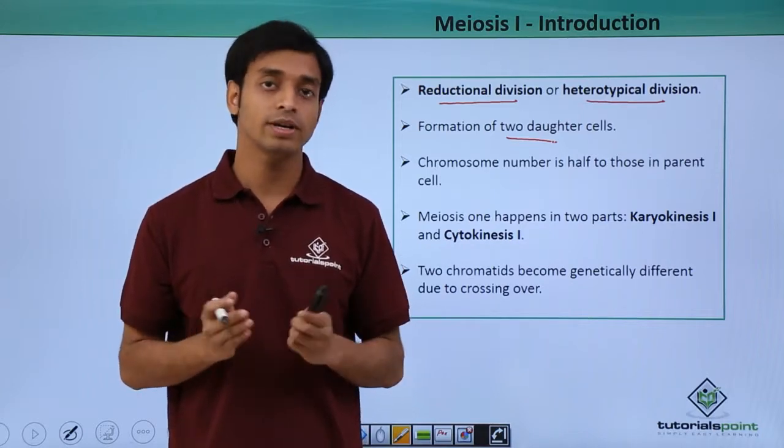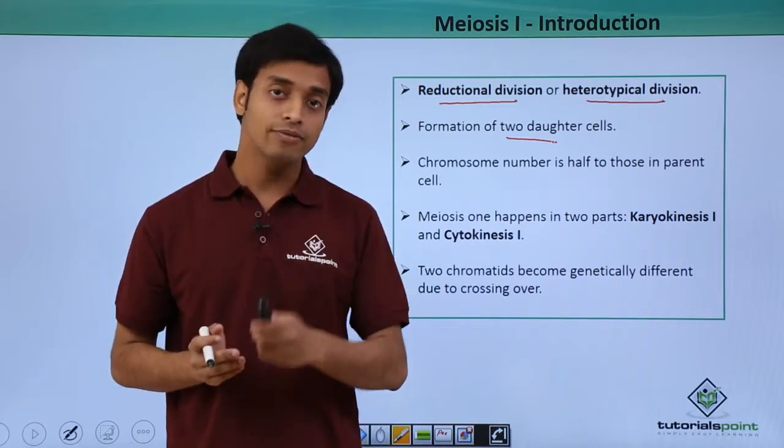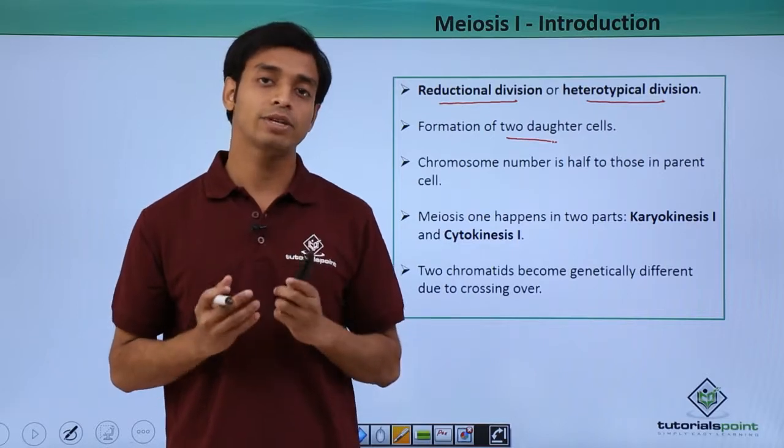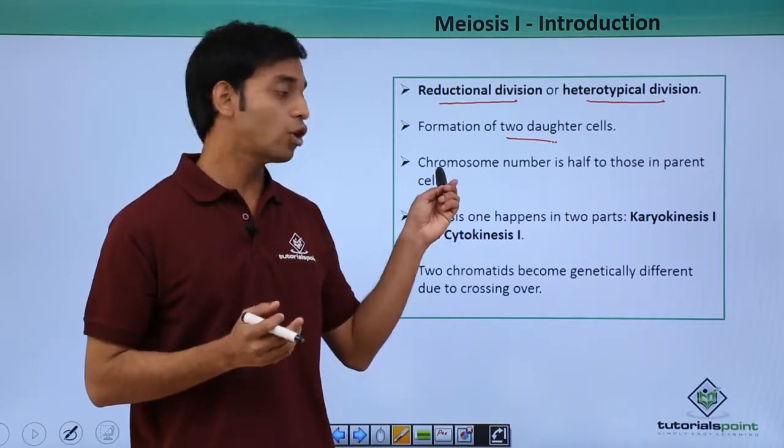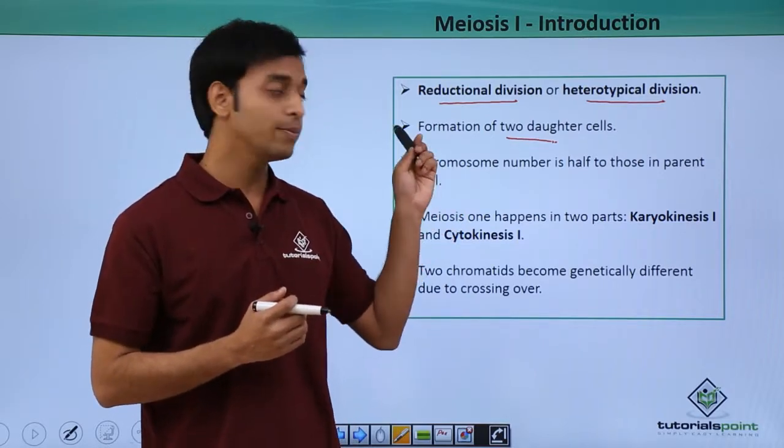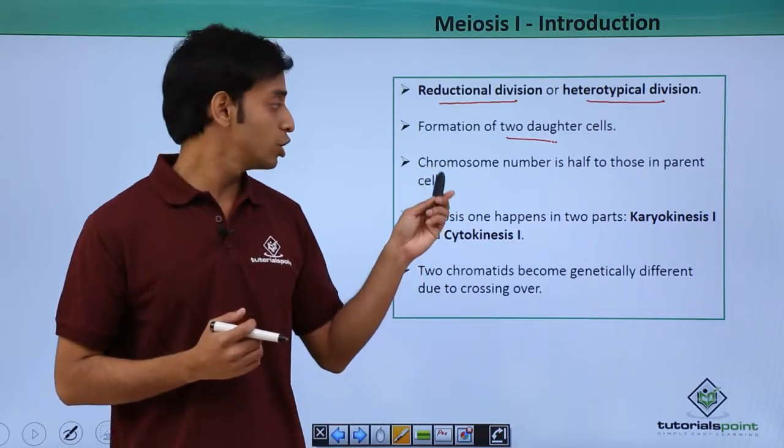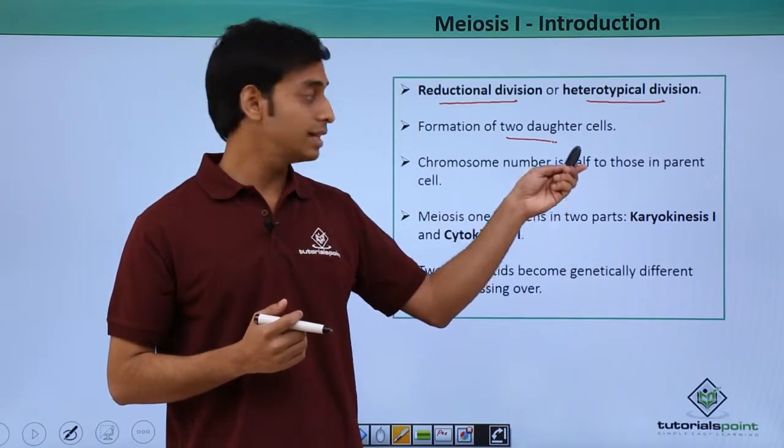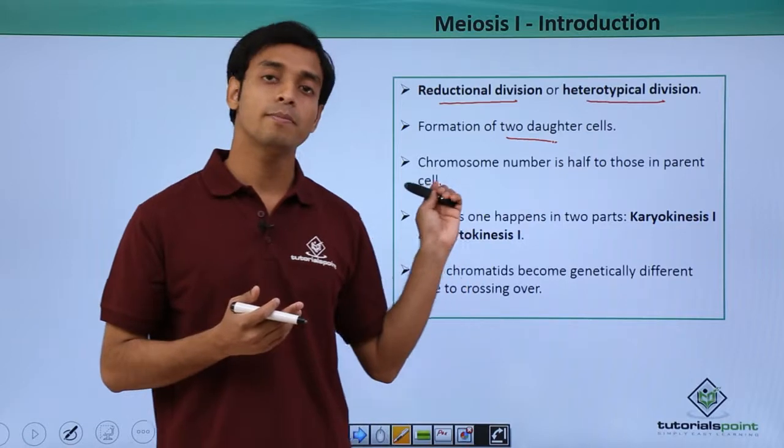The parent cells have 46 chromosomes. After meiosis 1, the cells which are being formed will have 23 chromosomes. So here, the chromosome number is halved to that present in the parent cells.